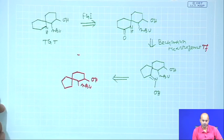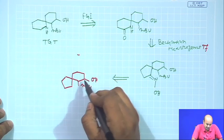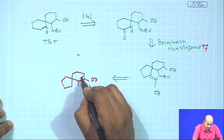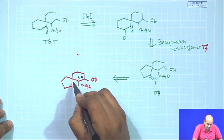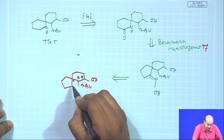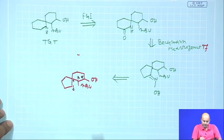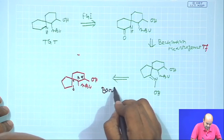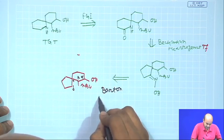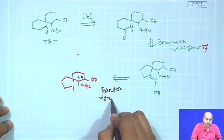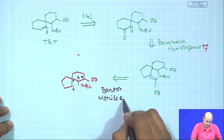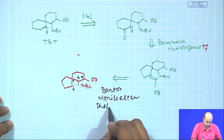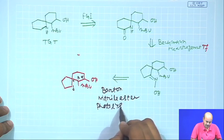I said that here there are always interesting reactions, and this particular one involves alpha, beta, gamma, delta positions. This particular transformation is basically named as Barton nitrile ester photolysis. I will be explaining what exactly this reaction is and how it takes place.